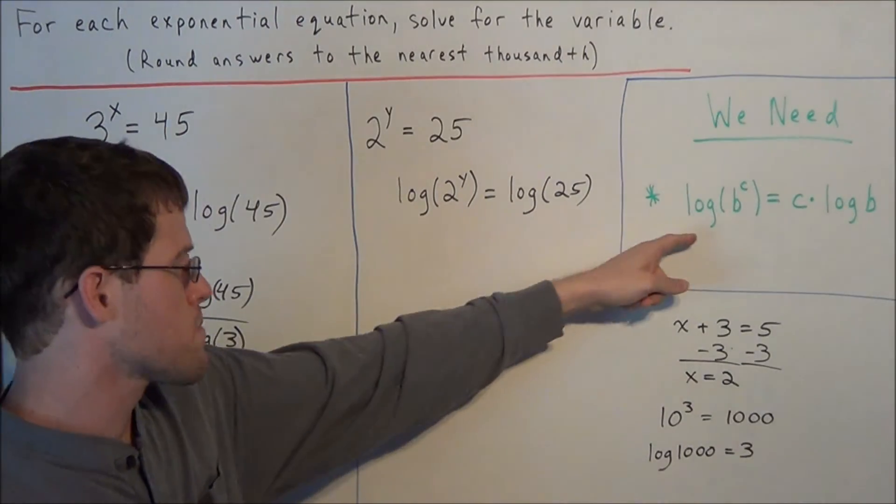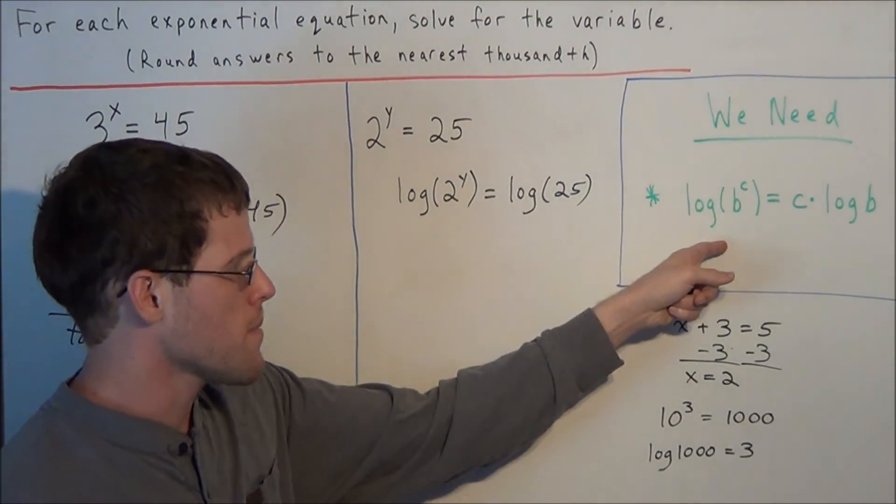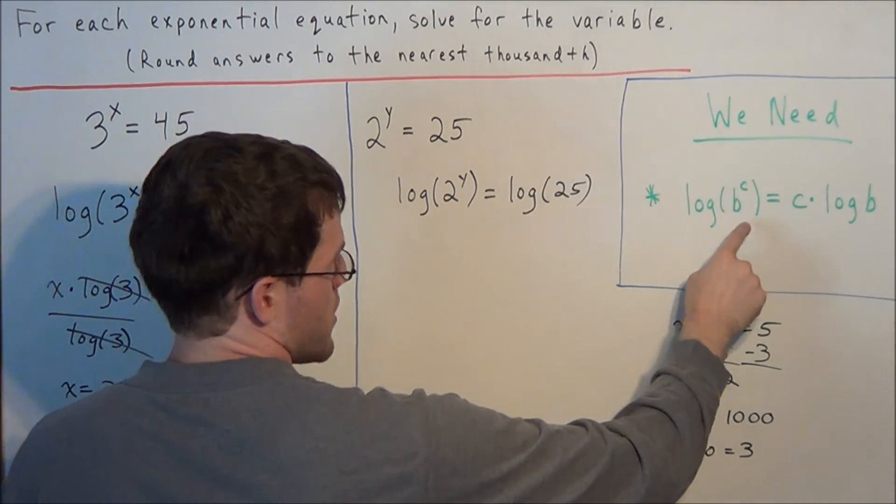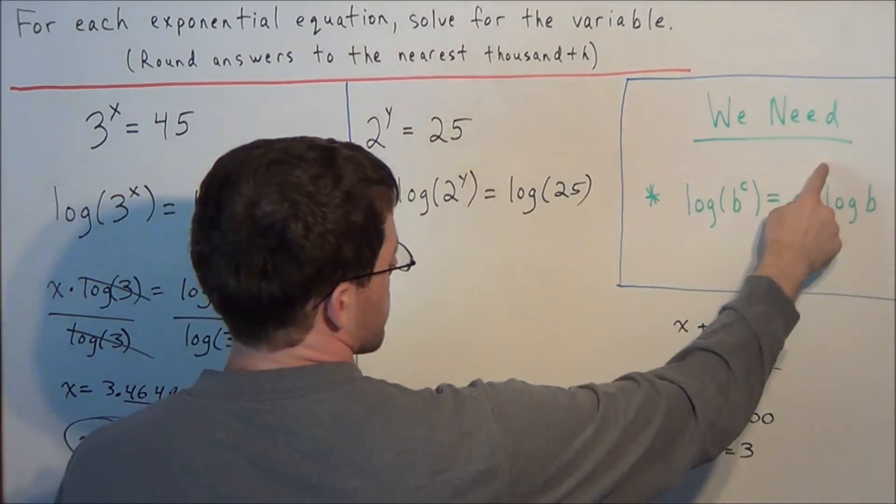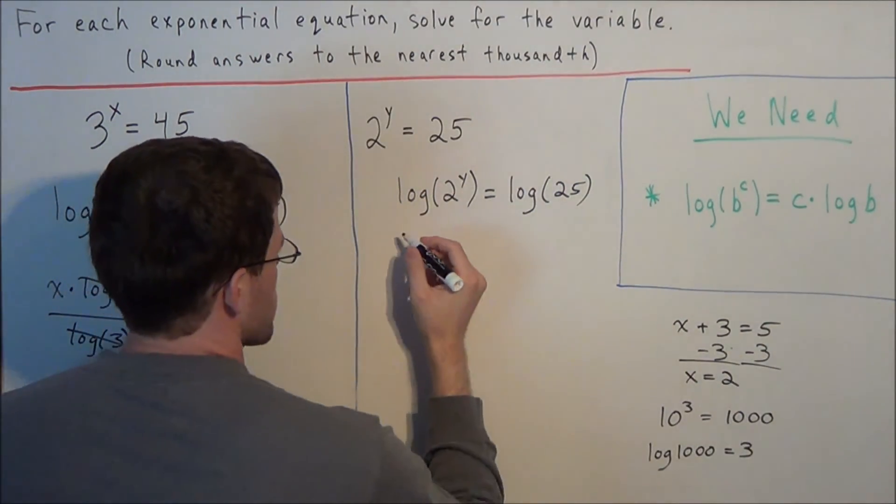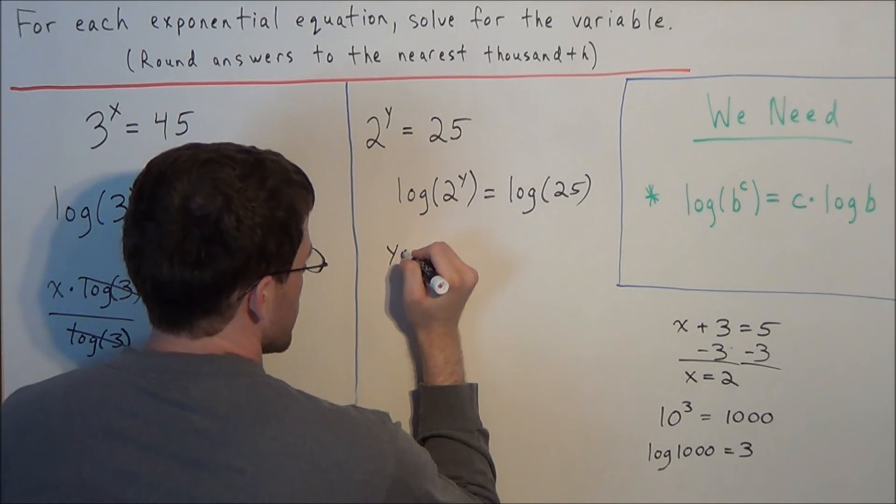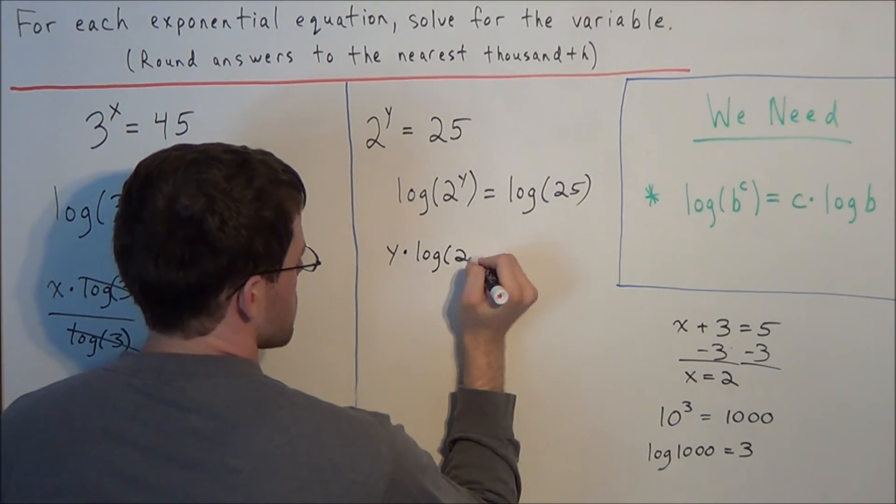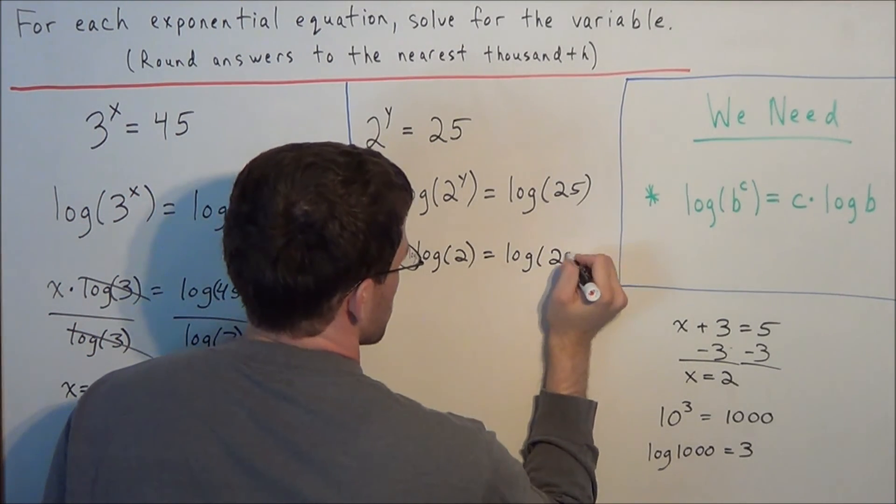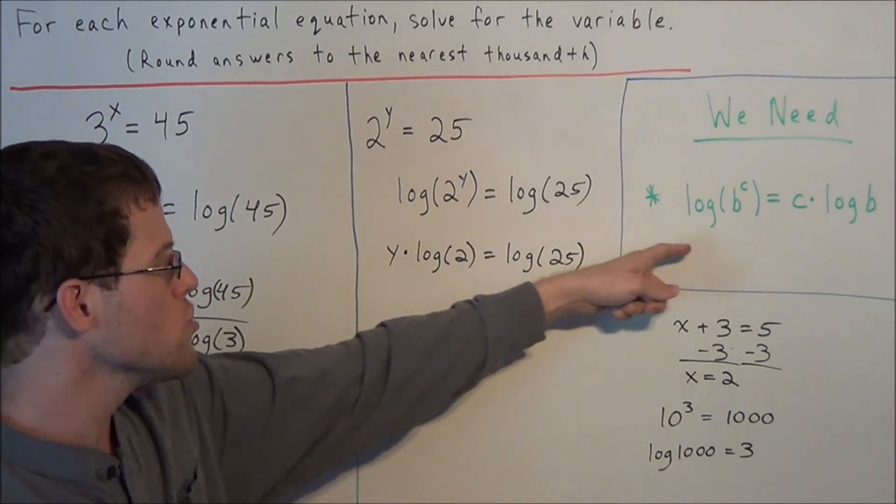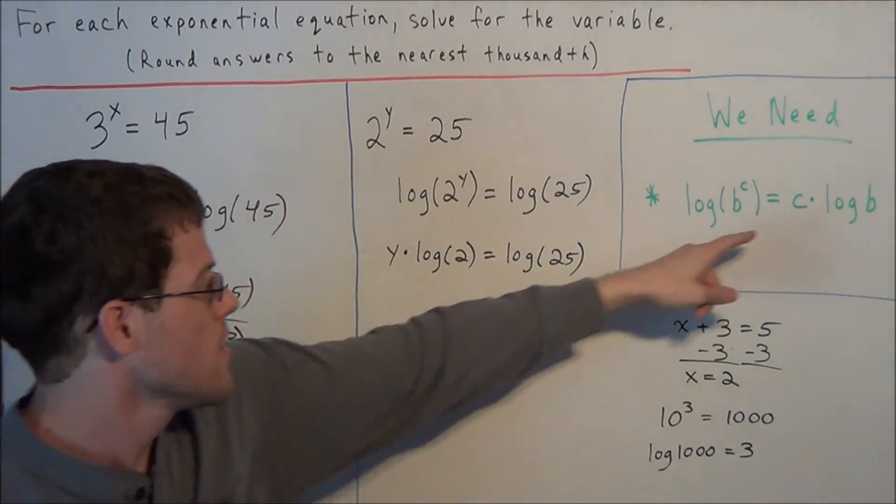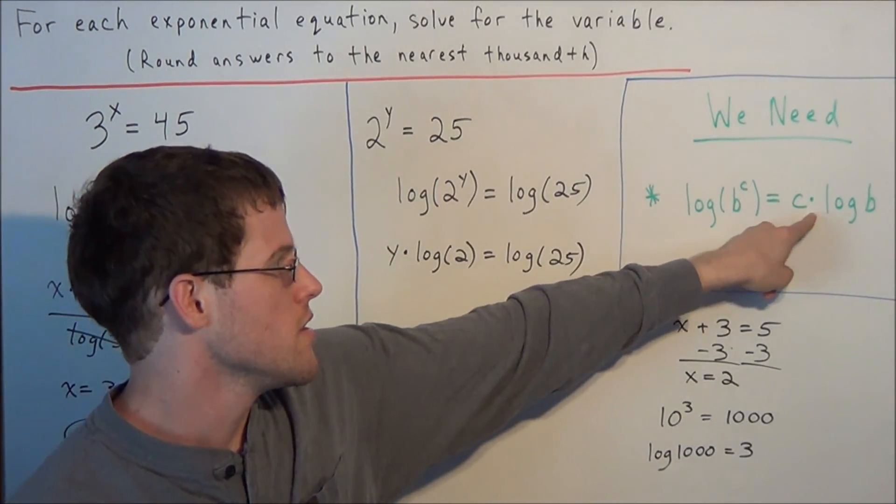So now we use this property, this exponent property of logarithms again. Remember when we have an exponent in our inner term, that exponent can pop out and attach itself by multiplication. So the exponent in this case is a y, so in the next line we can say y times log of 2 is equal to log of 25. Once again all we did was use this exponent property of logarithms to bring that exponent outside as it happens in this equation here.